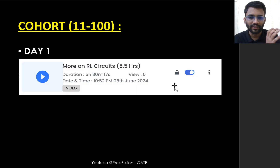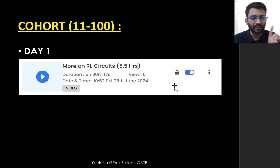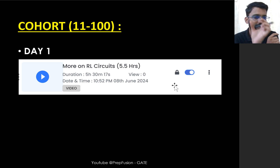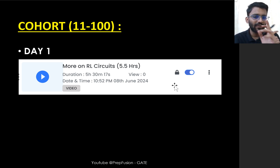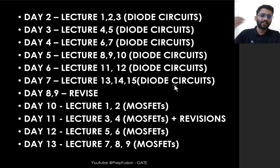This is the roadmap I have given. First of all, you need to complete the RL circuit part which I have newly added to the course. On Day 1, you will find it under a chapter named 'Some Miscellaneous Concepts' or 'Some Important Concepts' — it's chapter number five. There you will find this video, so complete the RL circuit part first, then we move to diode circuit.